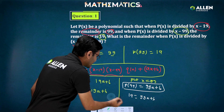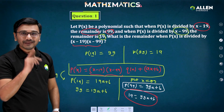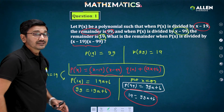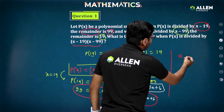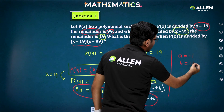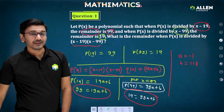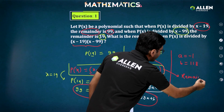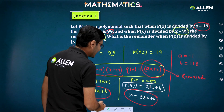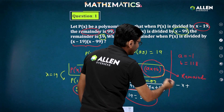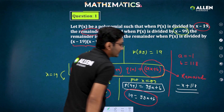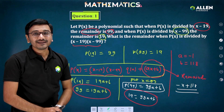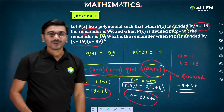Now look at these two equations: 19a + b = 99 and 99a + b = 19. Solving these two equations, you get a = minus 1 and b = 118. So putting these values into the remainder ax + b, the remainder is minus x + 118. When p(x) is divided by (x minus 19)(x minus 99), the remainder is minus x + 118.